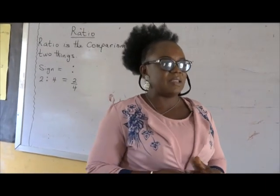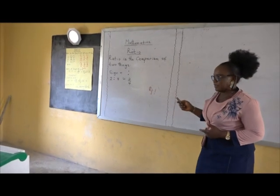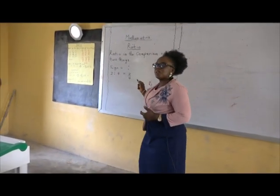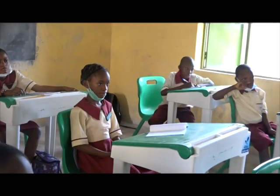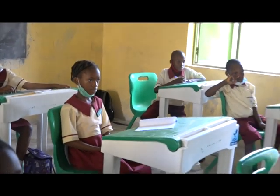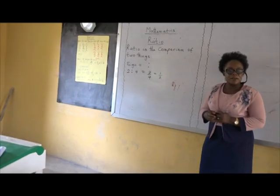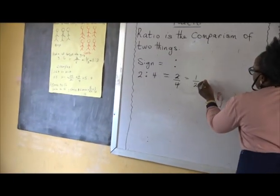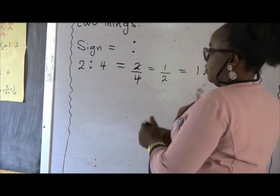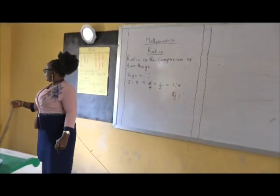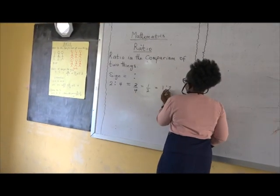Ratio can be written in the simplest form. We can reduce it to the simplest form. Like two over four — what number can we use to reduce this? Two. So let's divide it: two in two gives us one, two in four gives us two. We have one over two. Let's write it as ratio — it will be one ratio two.